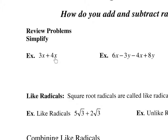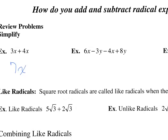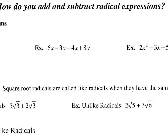Like terms are terms that have the same variable with the same exponent. 3x plus 4x are like terms, so we can add them. We add like terms by just adding the coefficients, 3 and 4, and then keeping the variable the same. For example, 6x and negative 4x are like terms. We add them by adding 6 and negative 4, and the variable stays the same, giving us 2x.